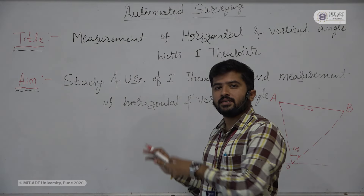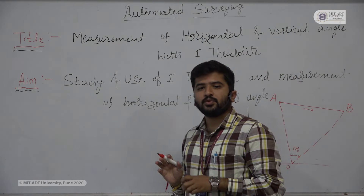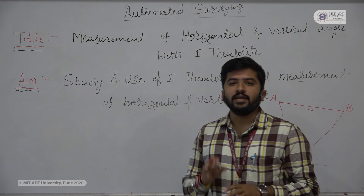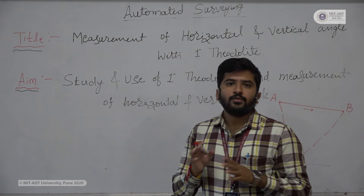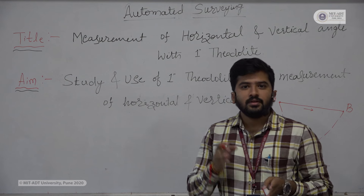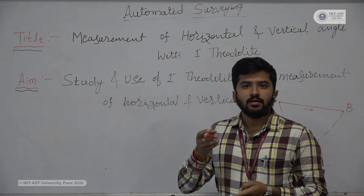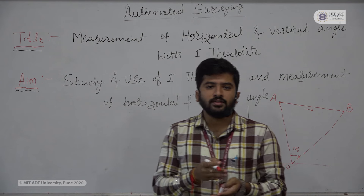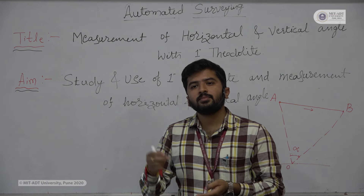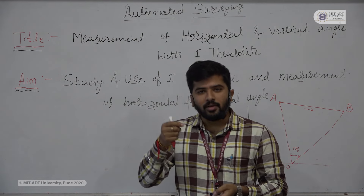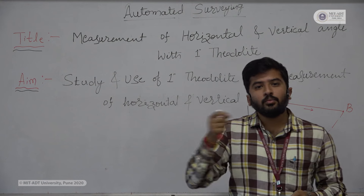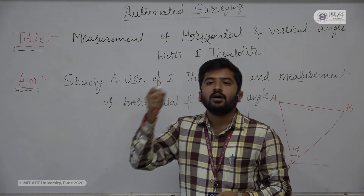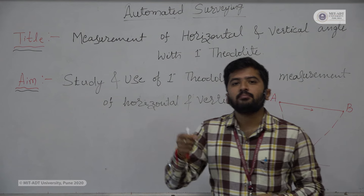Now we'll go with the vertical angle. What is the purpose of performing a vertical angle measurement? To find the height of any object — for example, a hill. Specifically, if you consider Mount Everest, it is increasing every year by some millimeters. Then how are you going to determine how much it increases? By using the experiment called vertical angle measurement.